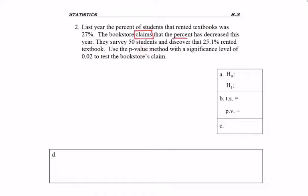So what comes after that? That they claim the percent has decreased. So down here in H0 and H1, I want to put p is less than. Be careful, because if you keep reading you might put the wrong number. Remember, it's the existing fact — the existing data — that's being challenged. Since the only information we have is about last year being 27%, I need to put 27% as my claim.